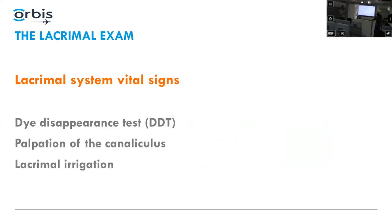Now the lacrimal system vital signs: there are three you check in any patient with tearing — the dye disappearance test (DDT), palpation of the canaliculus, and lacrimal irrigation.